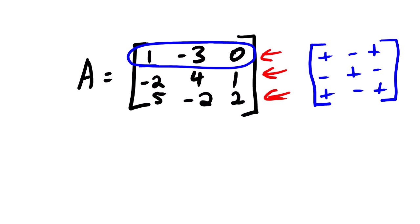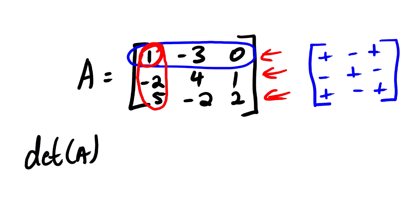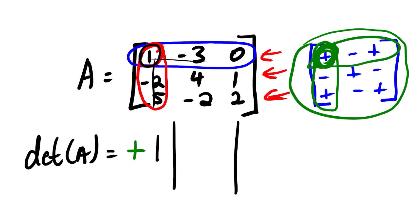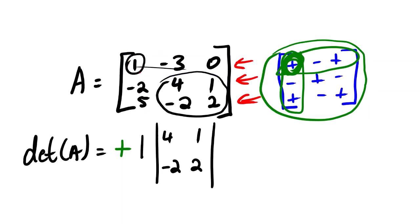In row number one, we are going to start with element (row 1, column 1), and we look at the number which forms this crossover. The determinant of A will include this number, which is one. Looking at the small table, we can see that on the first row and first column, this element must be positive. So we put the actual number which is one. When we exclude row number one and column number one, we can see that we have this mini matrix. So we are going to rewrite that matrix.